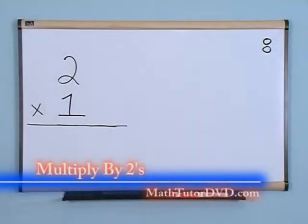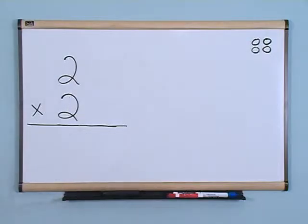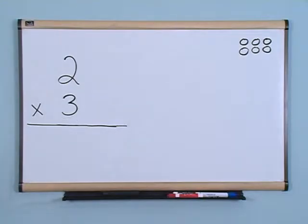2 times 1 is 2. 2 times 2 is 4. 2 times 3 is 6.